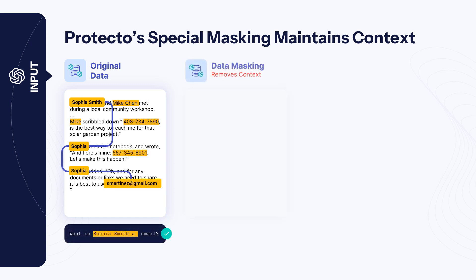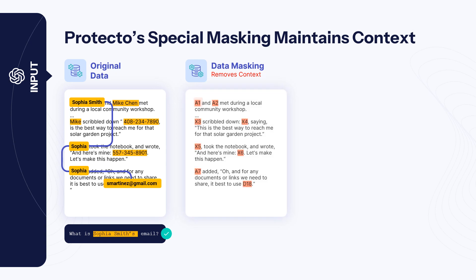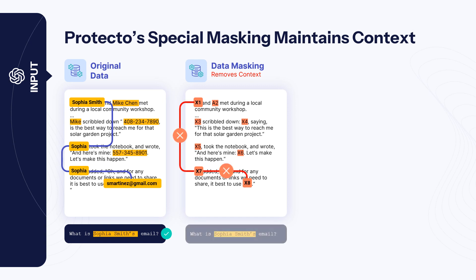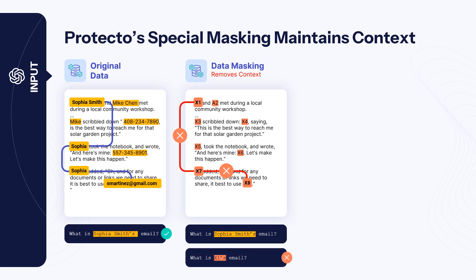But with data masking, the sensitive data such as Sarah, Sarah Smith, and her email are replaced with random tokens, which completely removes the link between the information, making it incoherent for the LLM to understand and give an accurate response.